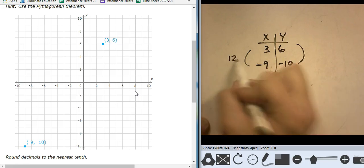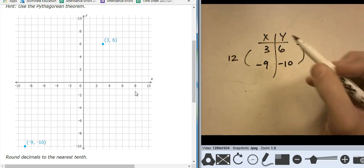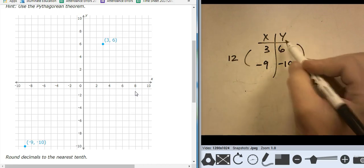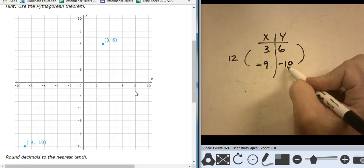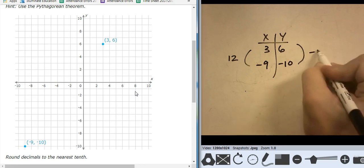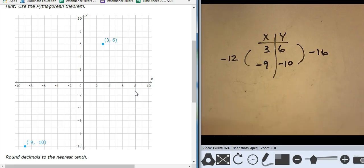Well, that's a change of 12 units. It's actually negative 12 units, but it's not going to matter because I'm going to end up squaring that number. And from 6 to negative 10 is a change of negative 16 units. Once again, the negative is not going to matter because I'm going to end up squaring this.